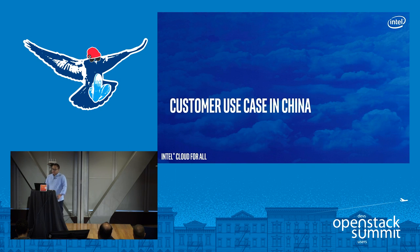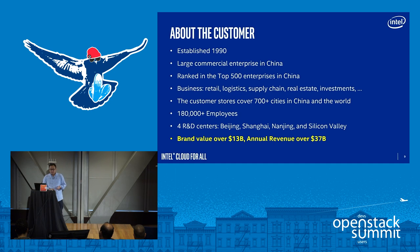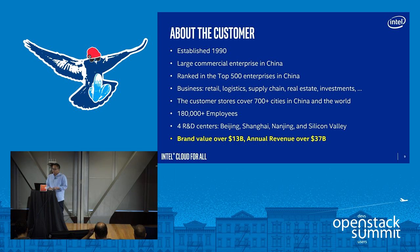Now the customer use case. Due to time constraints we didn't pass legal review, so we removed the customer name. The customer was established in 1990 — a large commercial enterprise in China, ranked in the top 500 enterprises in China. Their business covers retail, logistics, supply chain, real estate, and investment. Their stores are distributed across 500 cities in China with 180,000 employees. They have four data centers in Beijing, Shanghai, Nanjing, and Silicon Valley. Their brand value is over $13 million.